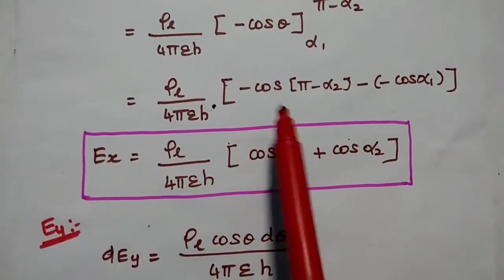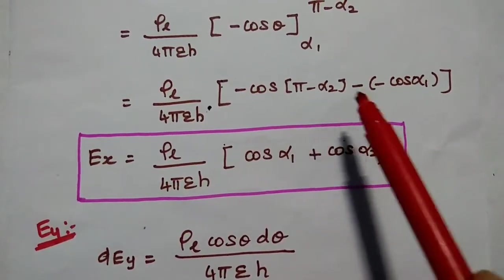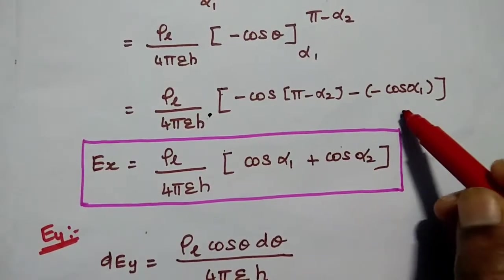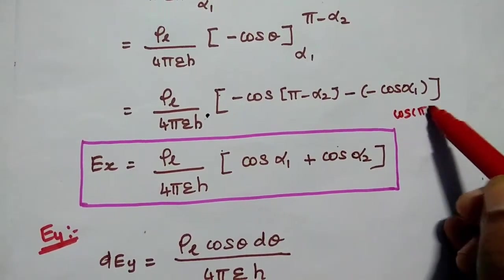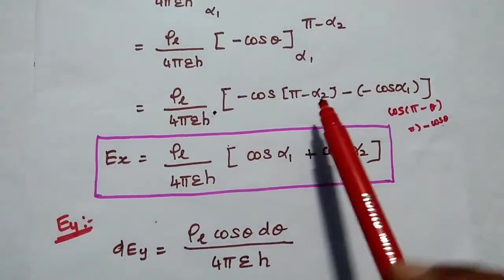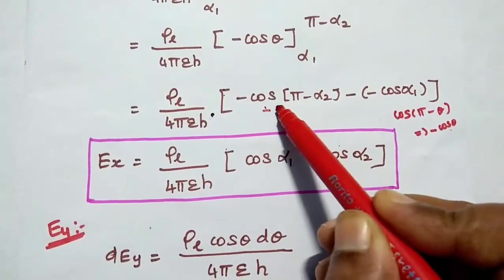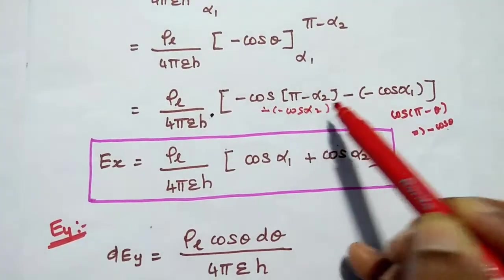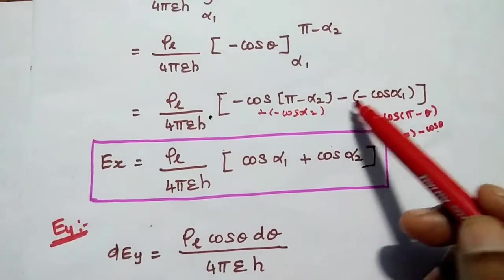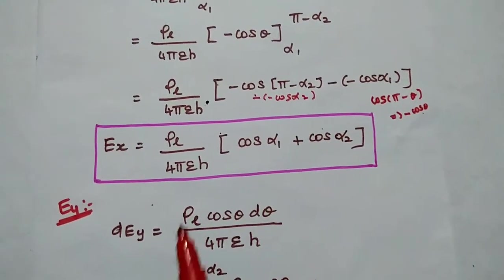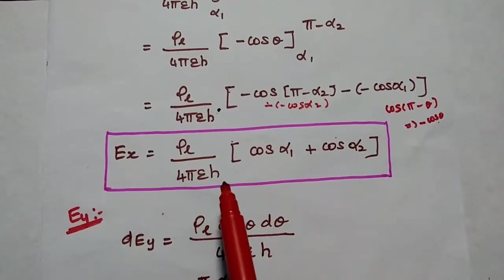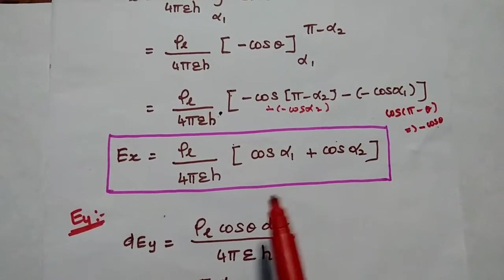Substituting the limits: −cos(π − α₂) − (−cosα₁). Using the identity cos(π − θ) = −cosθ, we get −(−cosα₂) + cosα₁ = cosα₂ + cosα₁. Therefore Ex = ρL / (4πεh) · (cosα₁ + cosα₂).